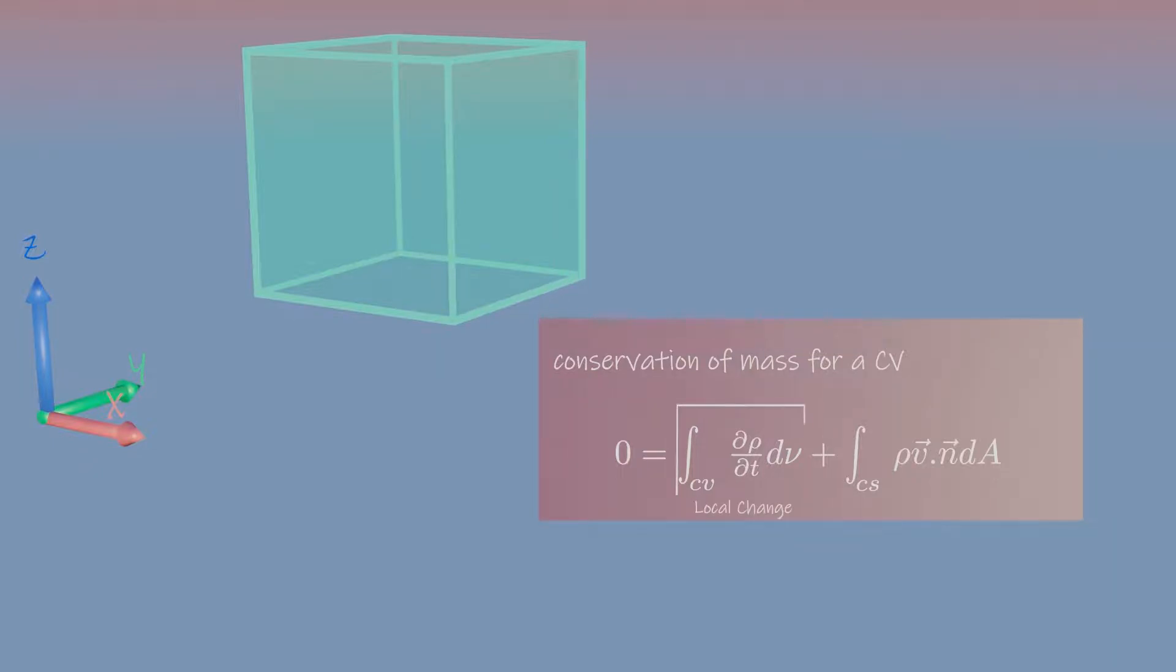The first term on the right side is the local change of mass. It represents the time rate of change in the mass inside the control volume.